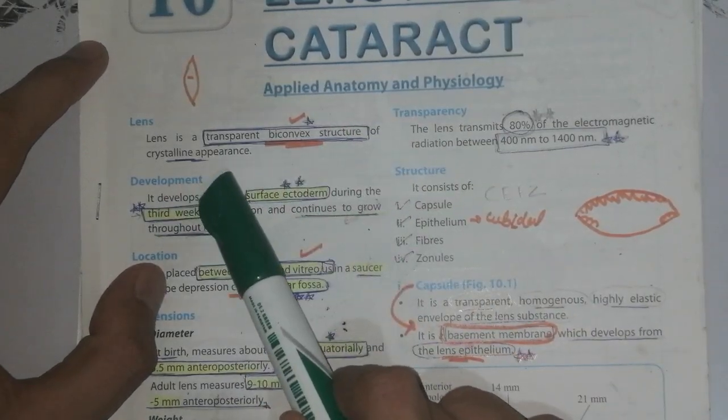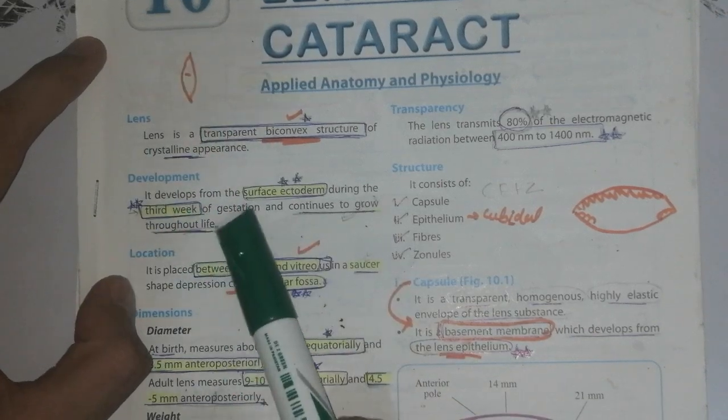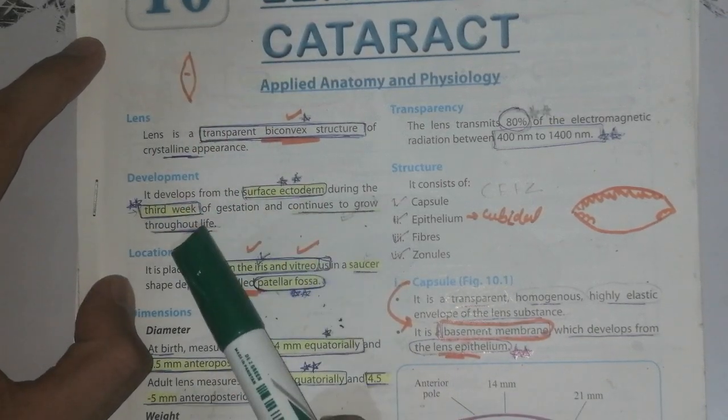Development: It developed from the surface ectoderm during the third week of gestation and continues to grow throughout life.